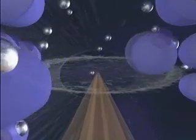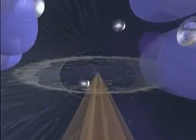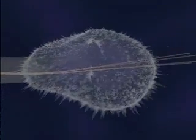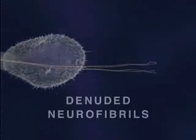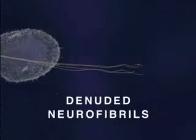Consequently, the neurite's microtubules begin to disassemble into free tubulin molecules, leaving the neurite stripped of its supporting structure. Ultimately, both the developing neurite and its growth cone collapse, and some denuded neurofibrils form aggregates or tangles, as depicted here.